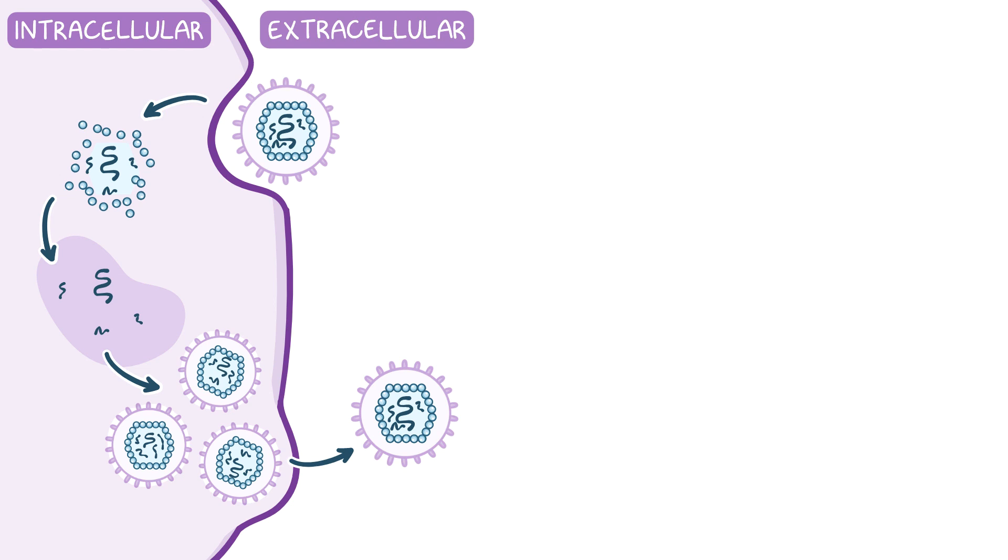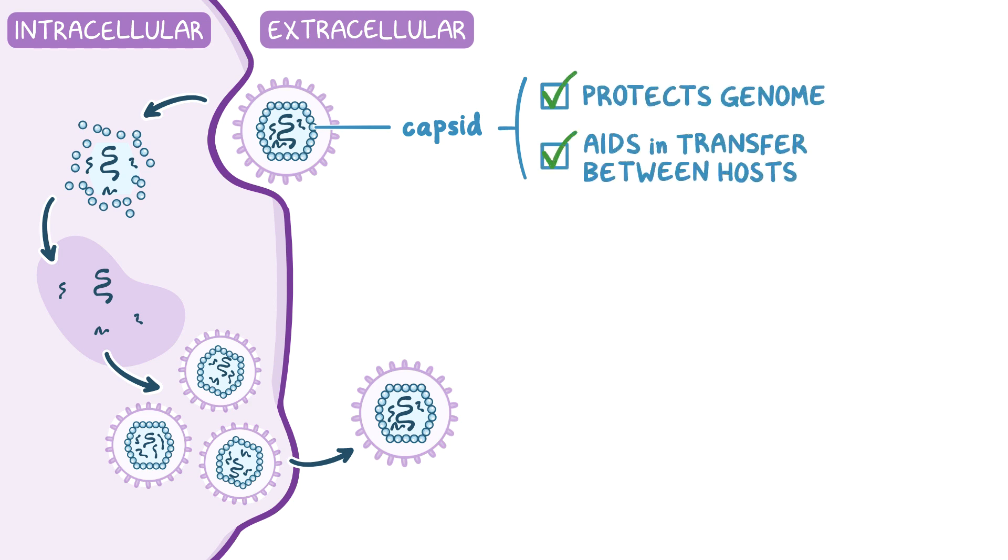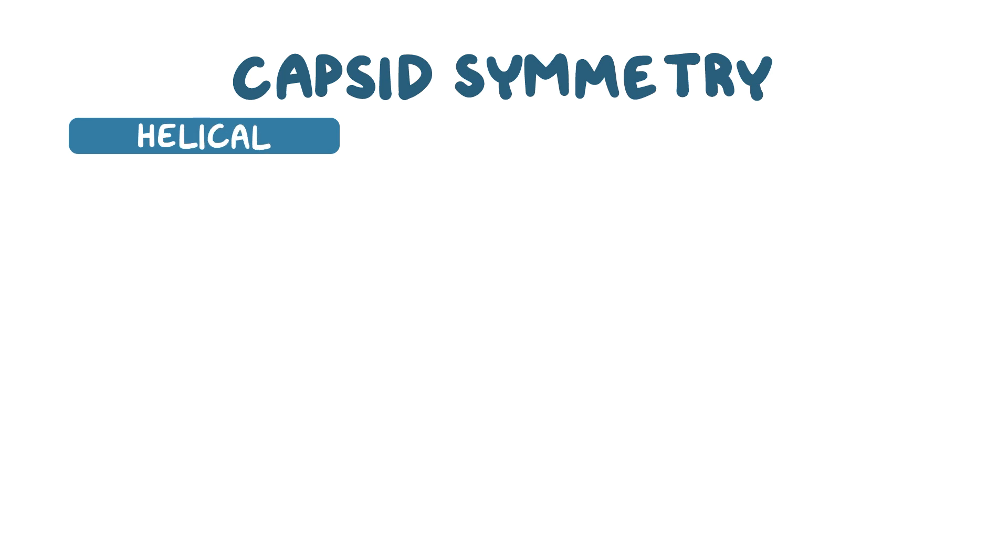The viruses are surrounded by an outer protein coating called a capsid, which protects the viral genome and aids in its transfer between host cells. According to their capsid symmetry, the viruses can come in many shapes and sizes. There are three types of shapes: helical, icosahedral, and complex.